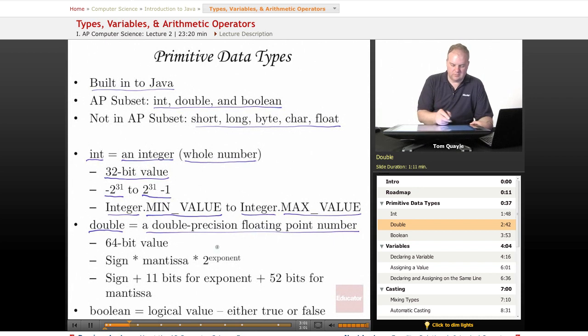Double precision means that it uses 64 bits to store the value. A single precision floating point value, which would be a float, would be 32 bits. So with 64 bits, we can store considerably more precise data. You can store a much larger or much smaller value in a double than you can in a float or single precision number.